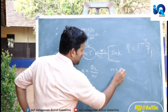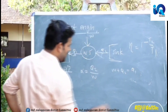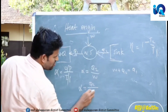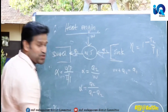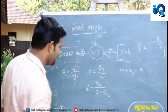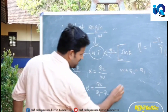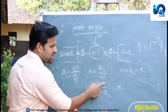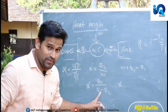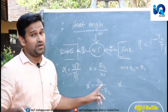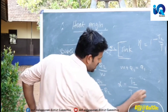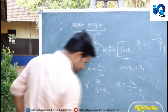W plus Q2 equals Q1. Alpha equals Q2 by Q1 minus Q2. Alpha equals T2 by T1 minus T2.